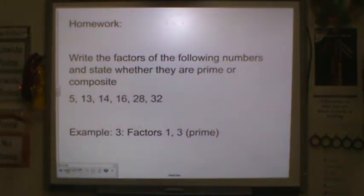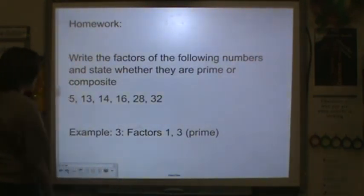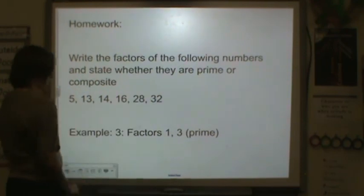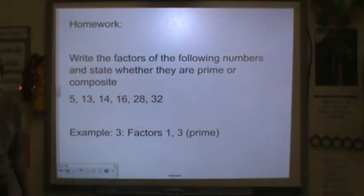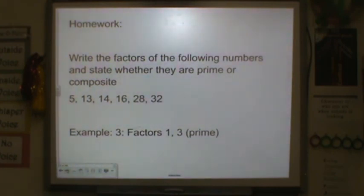For homework tonight, I want you to write the factors for the following numbers and state whether they're prime or composite. So you need to do 5, 13, 14, 16, 28, and 32. For example, 3. The factors are 1 and 3, and it is prime. Thank you for your hard work, and I will see you tomorrow.